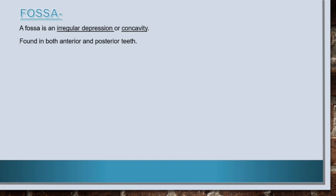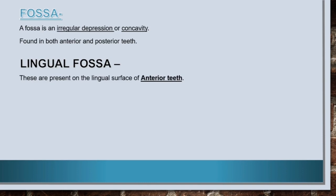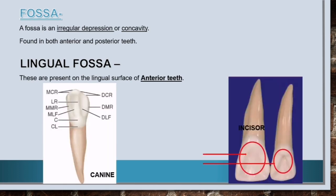First is lingual fossa. These are present on the lingual surface of anterior teeth, that is on incisors and canines. In incisors, there is one lingual fossa in the center of the lingual surface, whereas in canines the lingual fossa is divided into two with the lingual ridge and are known as mesial lingual fossa and distal lingual fossa according to their position.